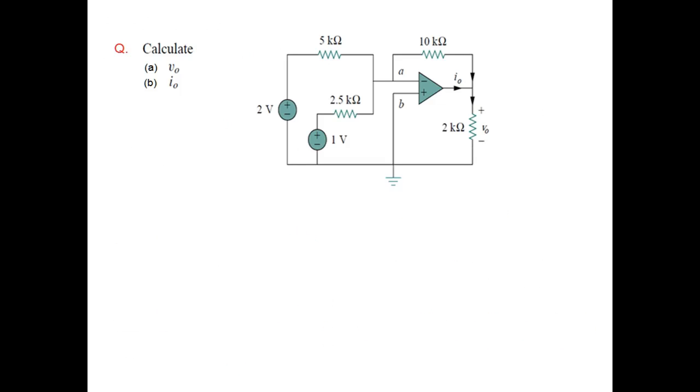Now in this example we need to find V0 and I0. As you can see from the circuit, the positive terminal is connected to ground and the negative terminal has two inputs. So this is a two-input summing amplifier. We will use the formula for summing amplifier. In this case, Rf is 10 kΩ, R1 is 5 kΩ, and R2 is 2.5 kΩ.